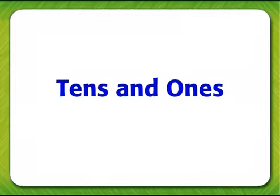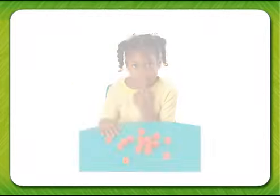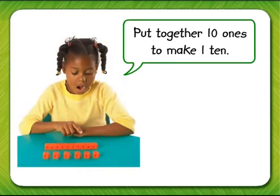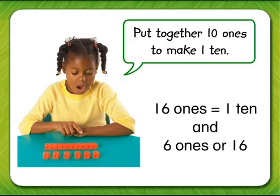Tens and ones. You can show a number as tens and ones. You can regroup ten ones as one ten. Put together ten ones to make one ten. The girl has one ten and six ones remaining. Sixteen ones equals one ten and six ones, or sixteen.